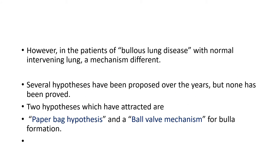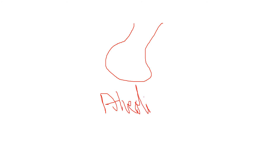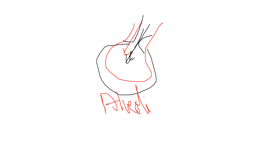There are two main hypotheses for bullous lung disease: the paper-bag hypothesis and the ball-valve mechanism. In the ball-valve mechanism, progressive inflammation of the alveoli causes chronic air trapping, the airway spaces become narrower, and progressive air trapping ultimately leads to a large bulla. However, this theory is refuted by CT scanning and intrabullous pressure measurements.